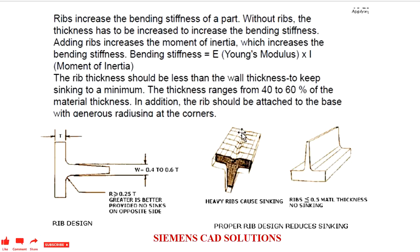Bending stiffness equals Young's modulus multiplied by moment of inertia. Also, part thickness plays the main role in designing the rib. Whenever we design the rib, the rib's thickness should be between 0.4 to 0.6 of the nominal thickness of the part. Nominal thickness is the overall thickness maintained on the plastic part. So W, the width of the rib, equals 0.4 to 0.6 T, where T is the thickness of the part.